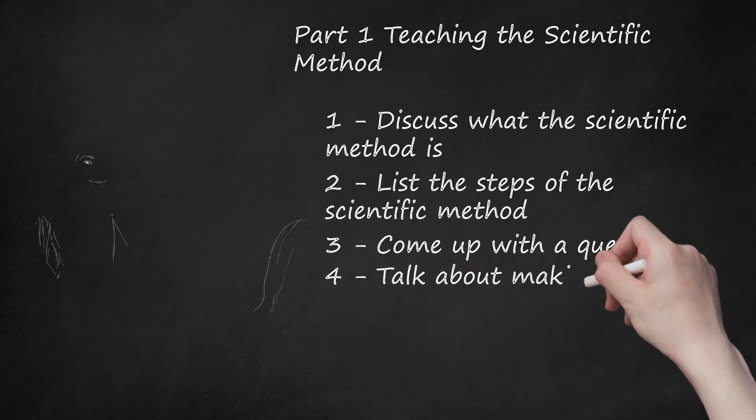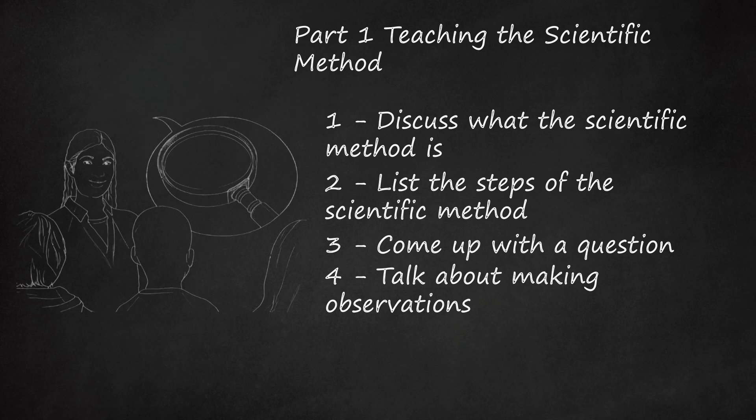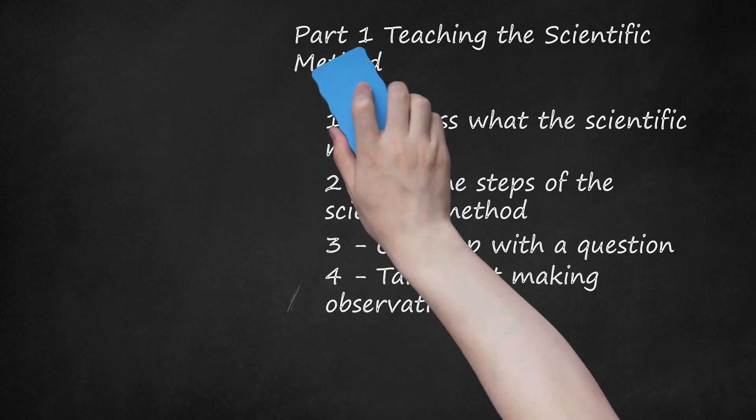4. Talk about making observations. After you have established a question to answer, you need to talk about how to go about answering that question. First, you must do some research and make some observations about your question. Go to the library or use the internet to research your question. If you want to learn more about rainbows, do some research about light, the sun, the sky, and rainbows themselves. Make some observations about when you tend to see a rainbow in the sky. Do you see rainbows at any other time or place?